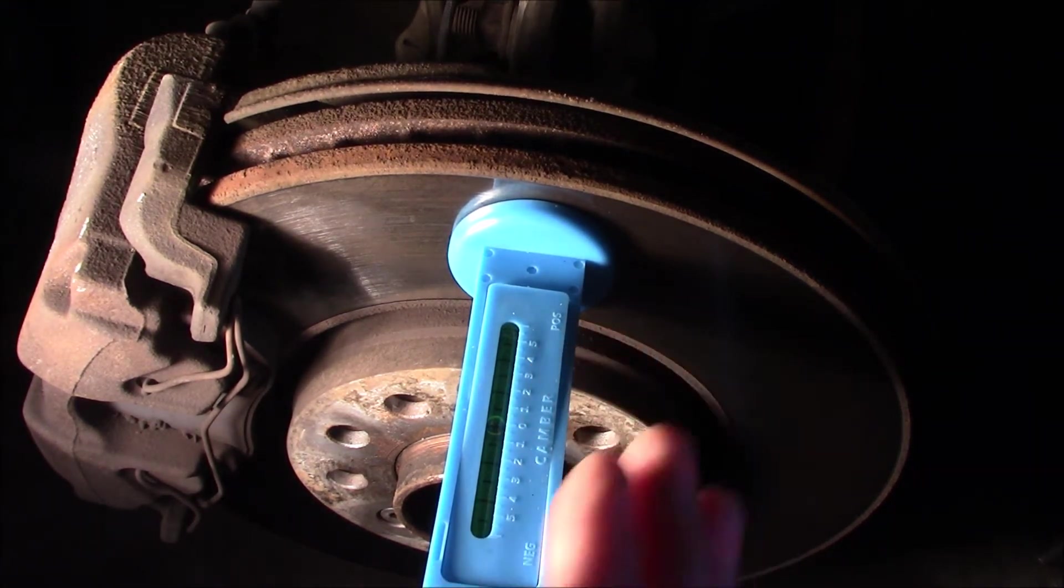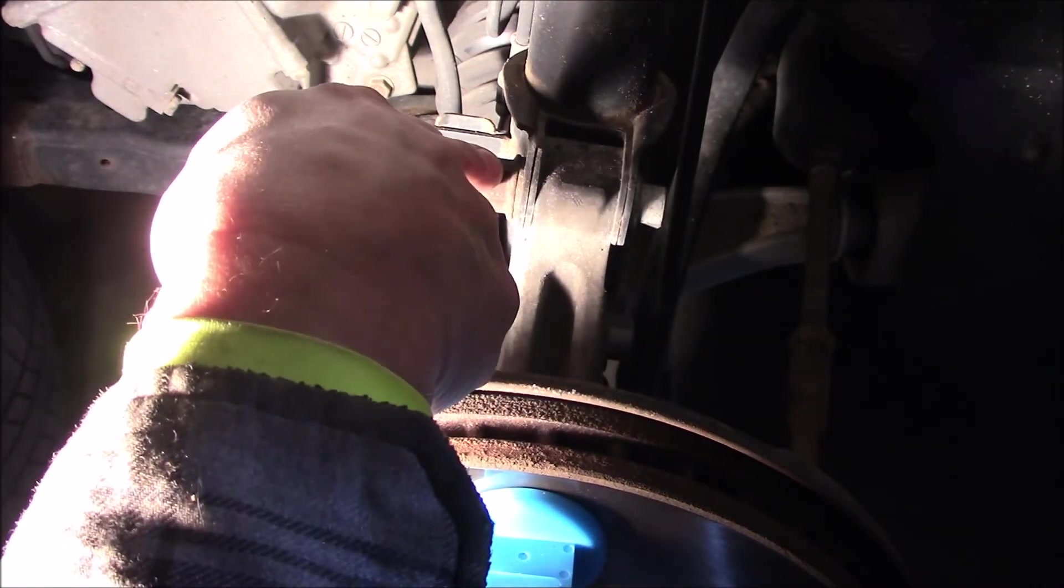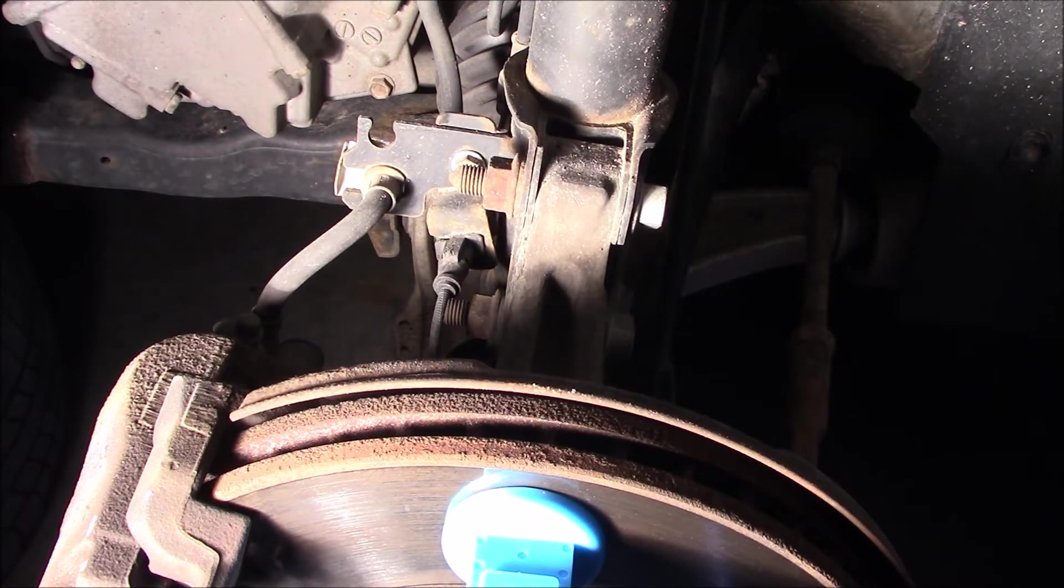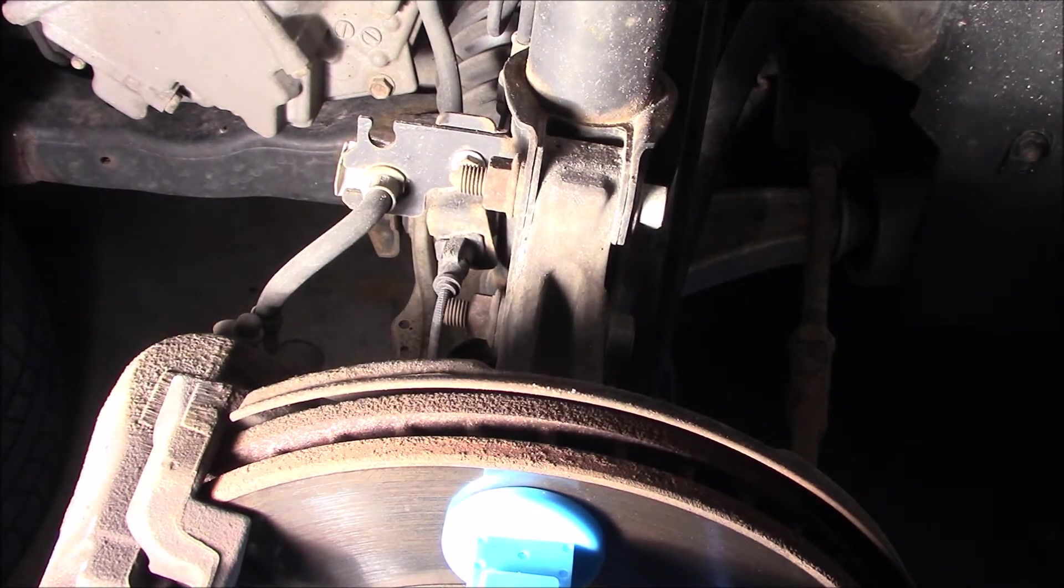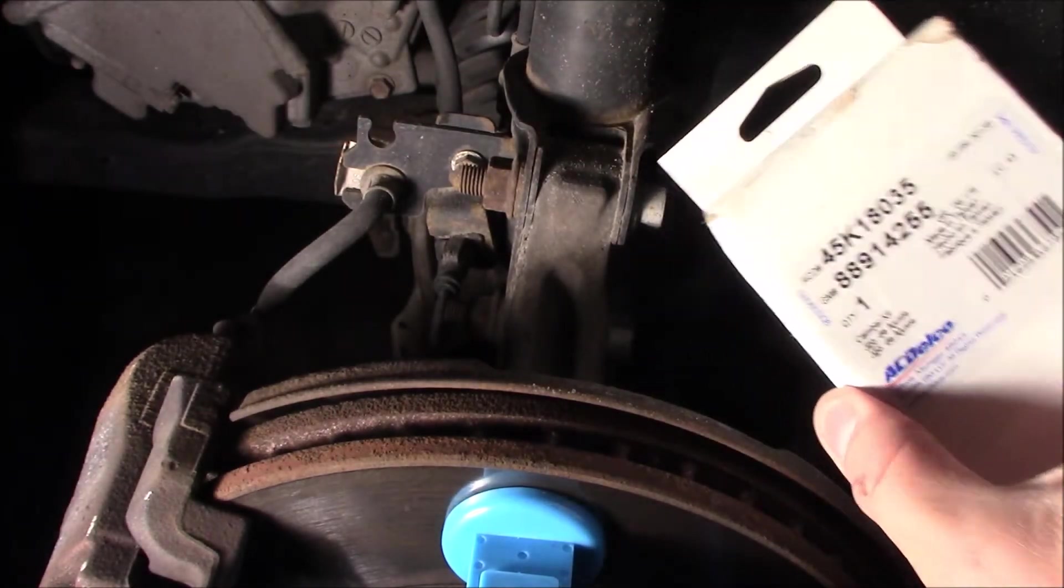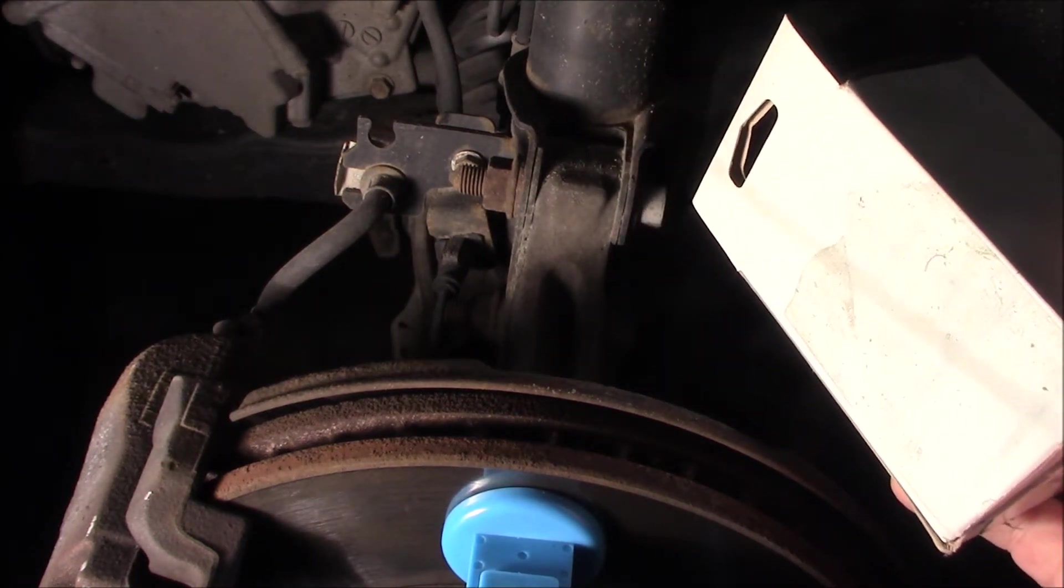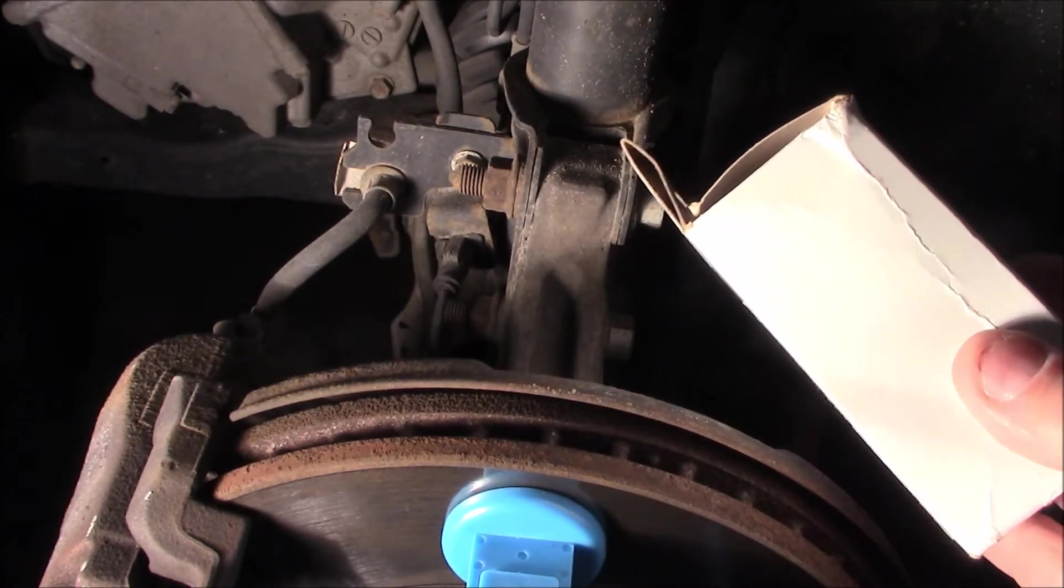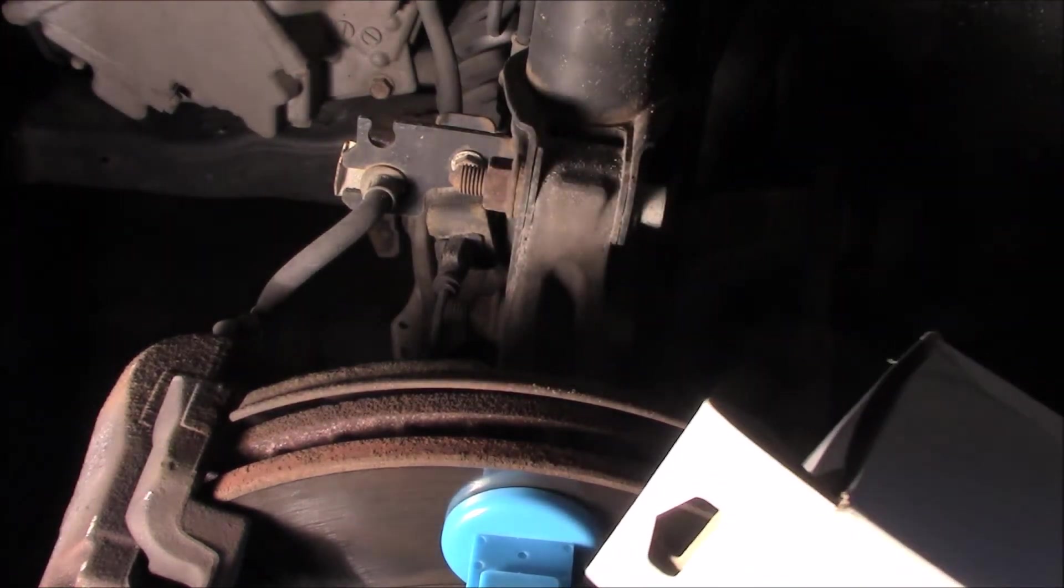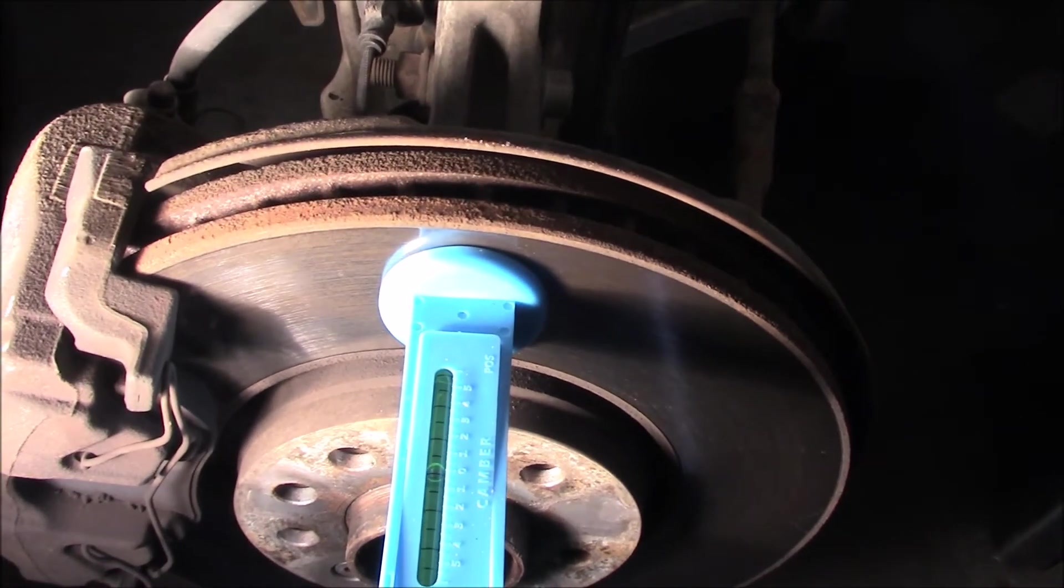What we're going to do is remove this top bolt here and loosen this bottom bolt. I'm going to replace the top bolt there with a camber bolt. There's a little cam on there and it'll push this steering knuckle in or out while we're tightening it or moving it. Then we'll tighten it up on the top and the bottom once we achieve our angle.